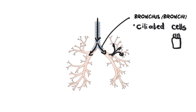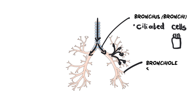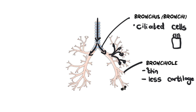The bronchi get smaller into very fine little branches called bronchioles. The bronchioles are very small with thin walls and progressively less cartilage the deeper you go, which makes sense because cartilage would get in the way of gaseous exchange. At the ends of the bronchioles sit the gaseous exchange surfaces — the alveoli.